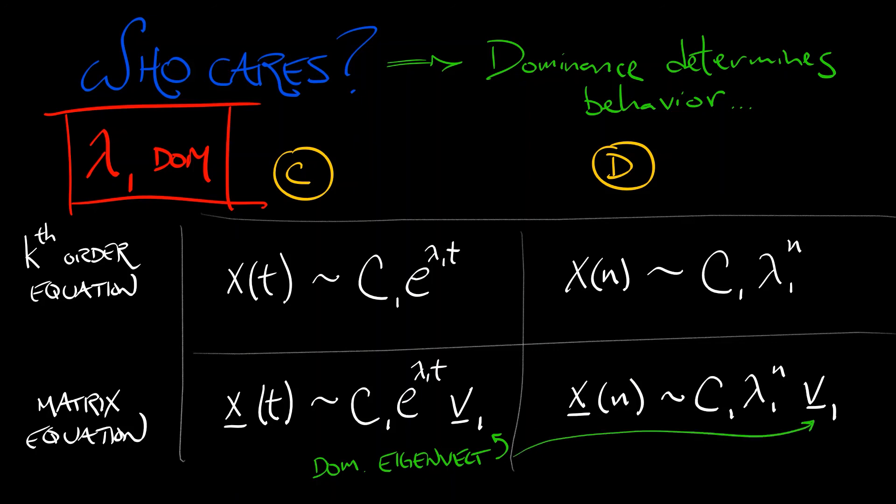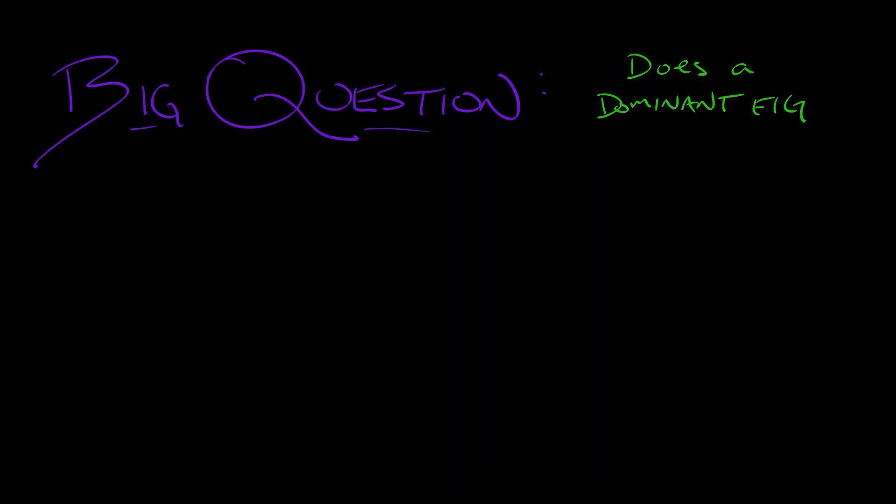That is very important. We're going to make great use of this in chapters to come. And because it's so useful, the big question is, does my linear system have a dominant eigenvalue?